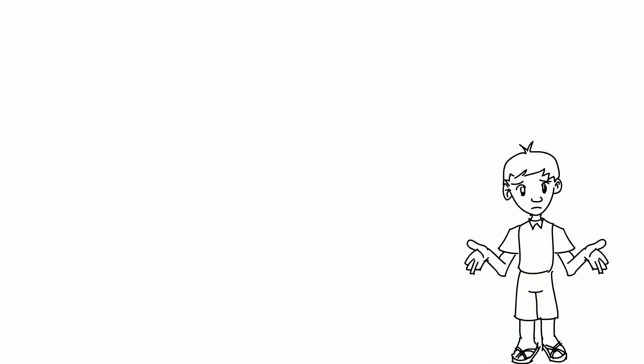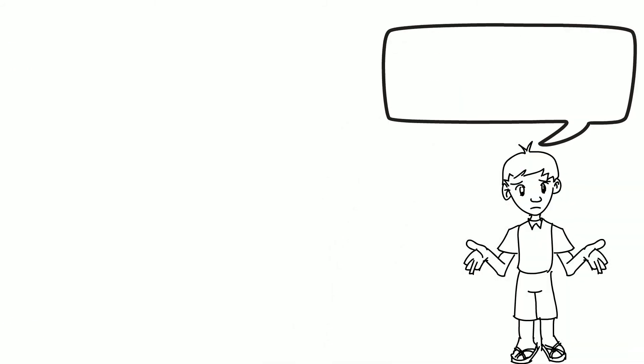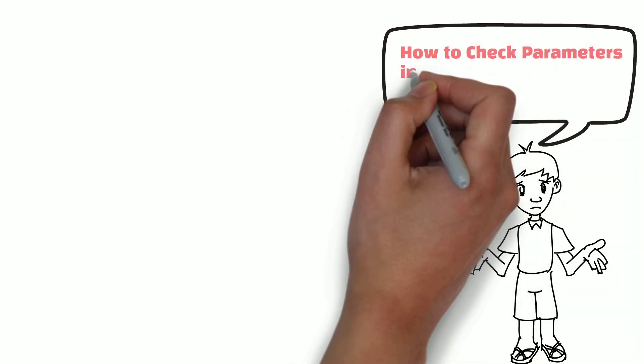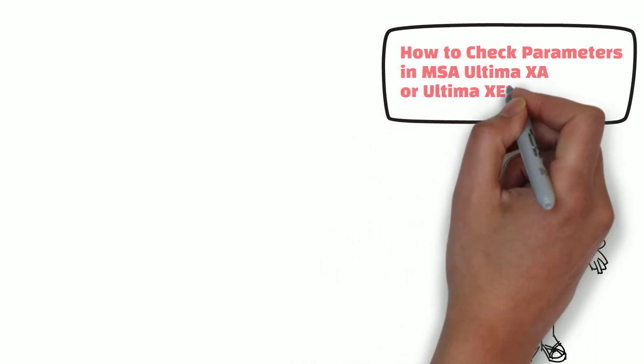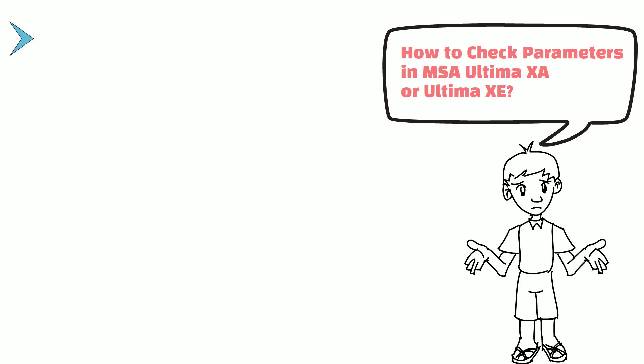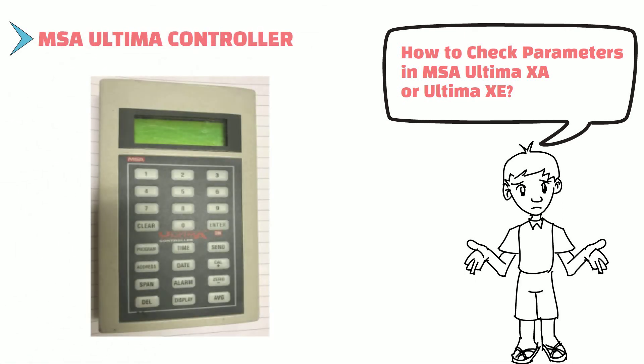First of all, how to check parameters in these two models? Here, you can see the image of MSA controller. You have to have MSA controller in order to access parameters in MSA Ultima XA or Ultima XE. You can also change parameters with help of this controller.